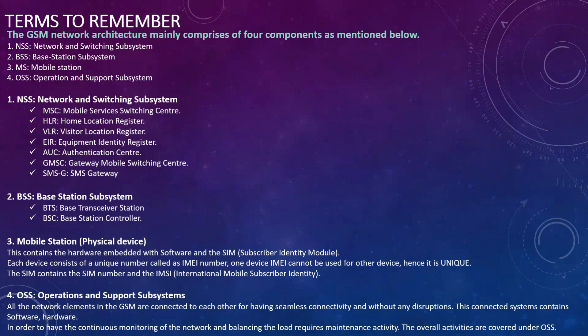To summarize NSS: the GSM network consists of four main components — NSS, BSS, MS, and OSS. Within NSS, the elements are: MSC (mobile switching center), HLR (home location registry), VLR (visitor location registry), EIR (equipment identity registry), AUC (authentication center), GMSC (gateway mobile switching center), and SMSC (SMS gateway).